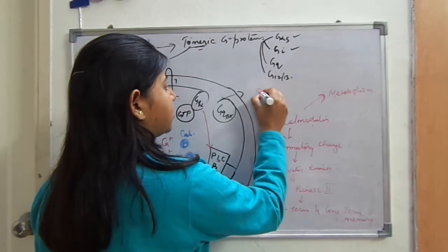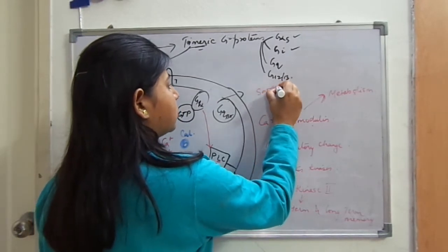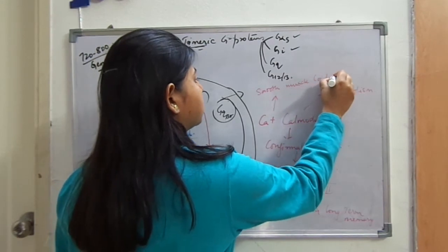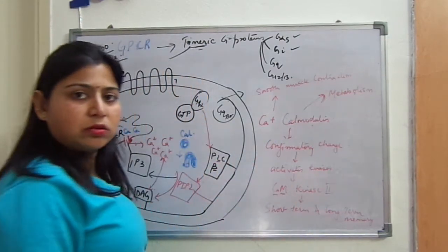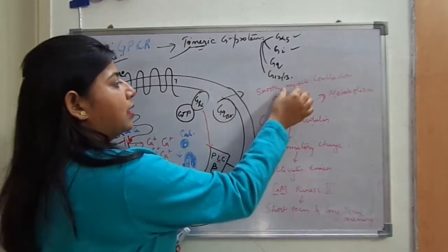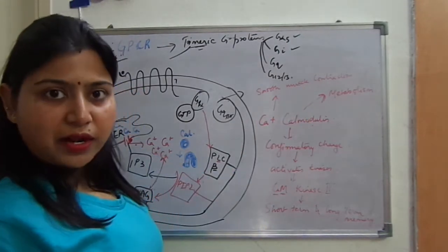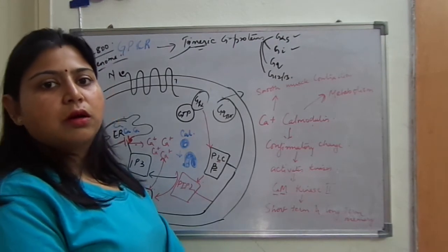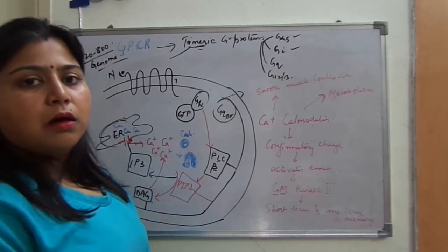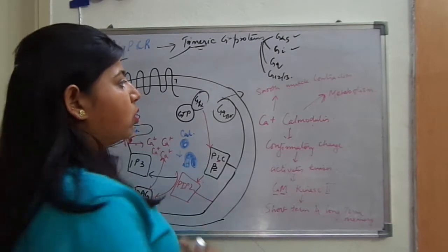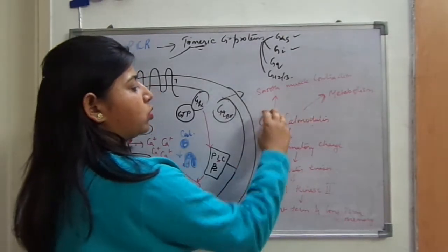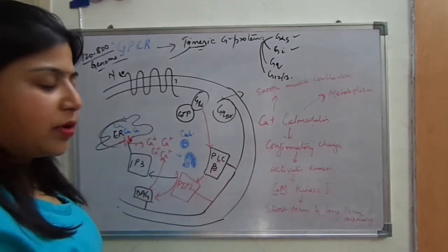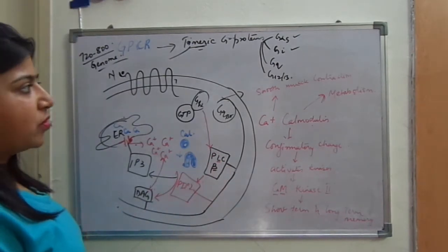Calcium-calmodulin is also responsible for smooth muscle contraction. If anyone has calcium loss in the body, there will be less smooth muscle contraction. So joint pain and knee pain in old age are because of this reduced amount of calcium, and this is all dependent on the G-protein coupled receptor present in the membrane.